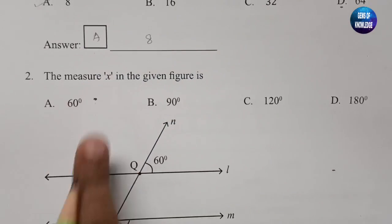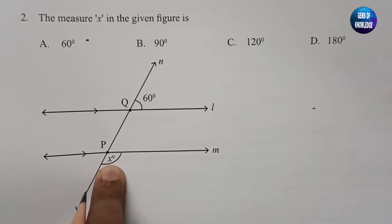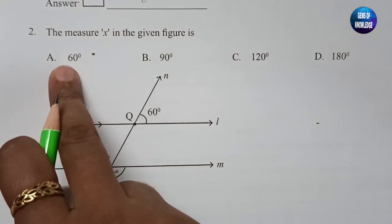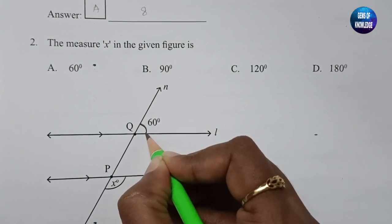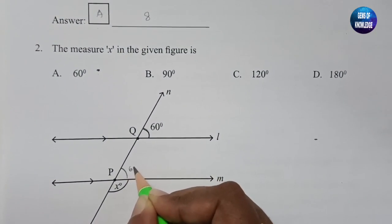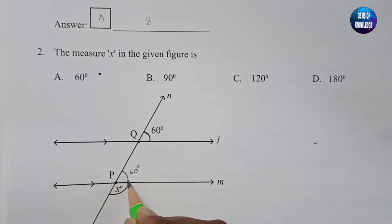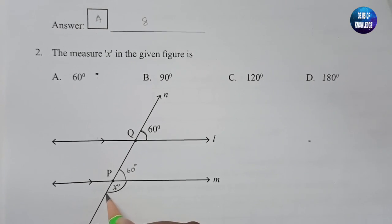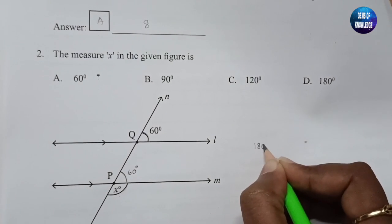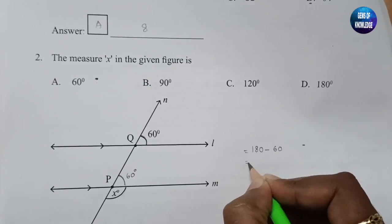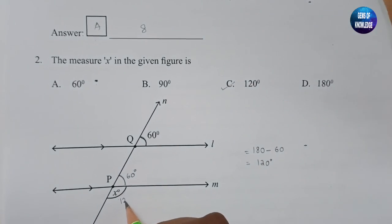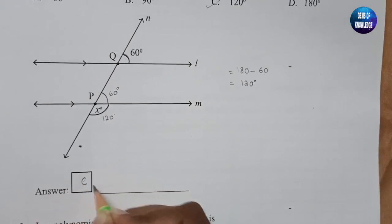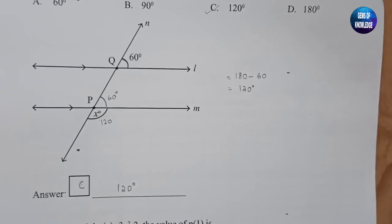Second question: find the measure of angle x in the figure. The options are 60, 90, 120, or 180. Since one angle is 60°, the opposite angle is also 60°. The complete angle on a straight line is 180°, so 180 minus 60 gives 120°. The answer is C: 120 degrees.